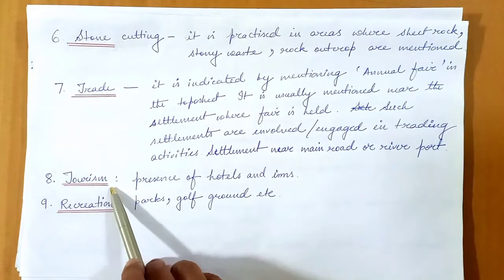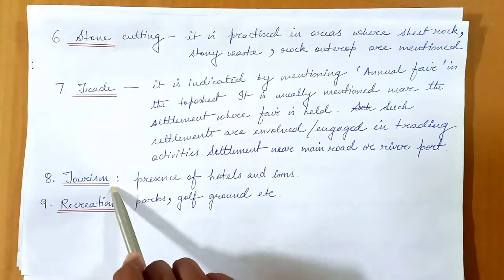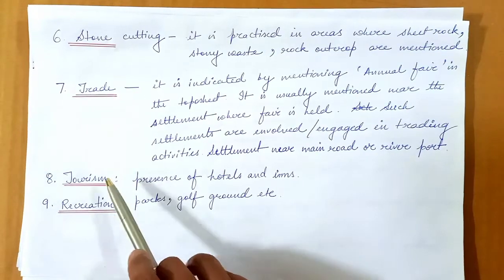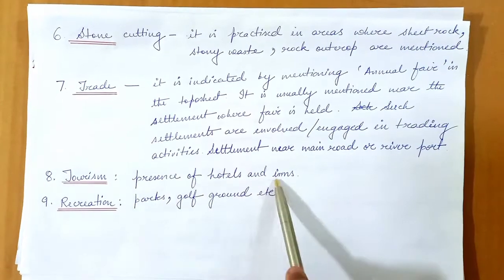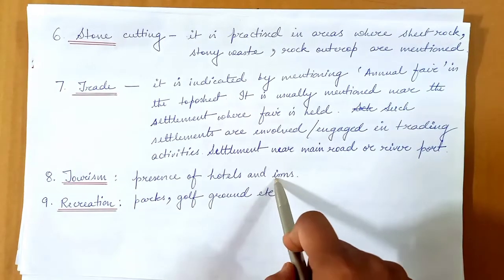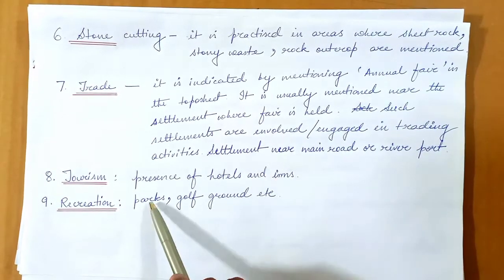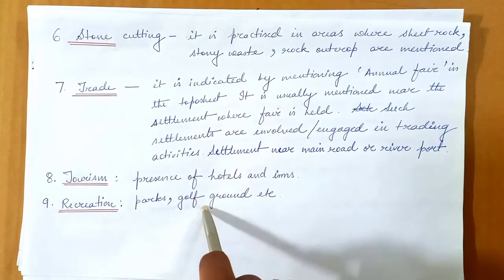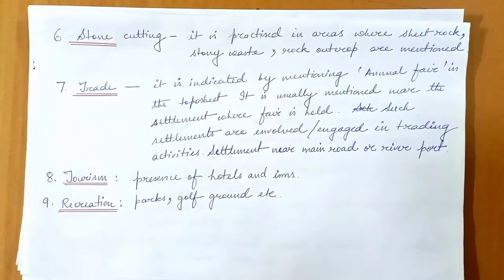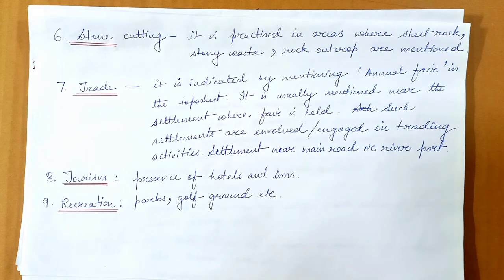Tourism is an occupation practiced where there is presence of hotels and inns in the topo sheet. If we find paths, golf grounds, etc., then it indicates the occupation to be recreation. These are the different occupations that we can interpret from the topographical sheet. Thank you.